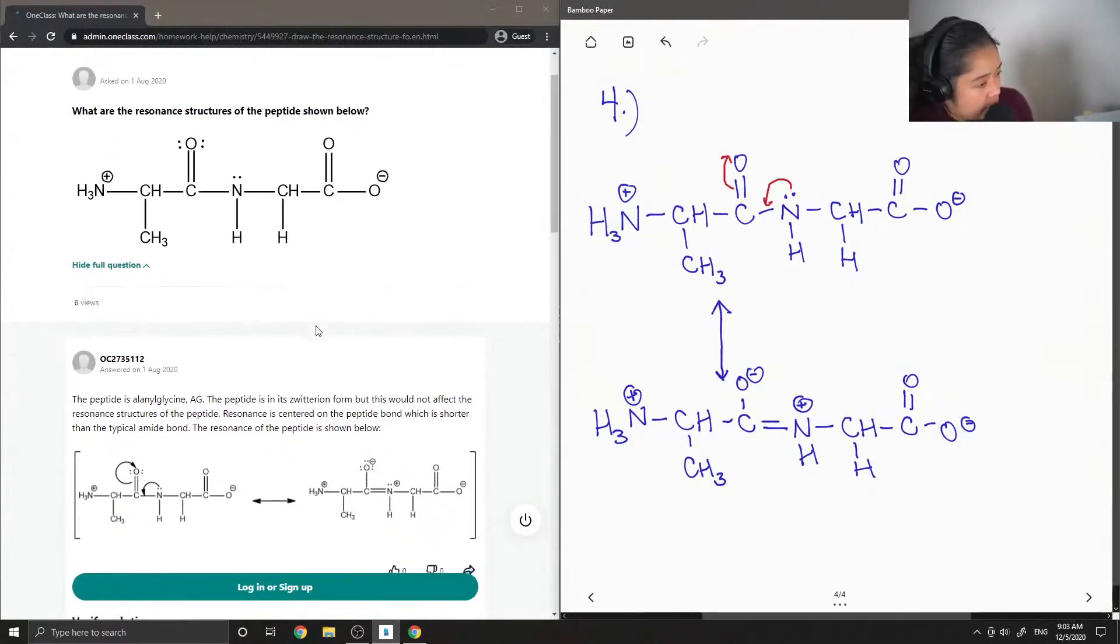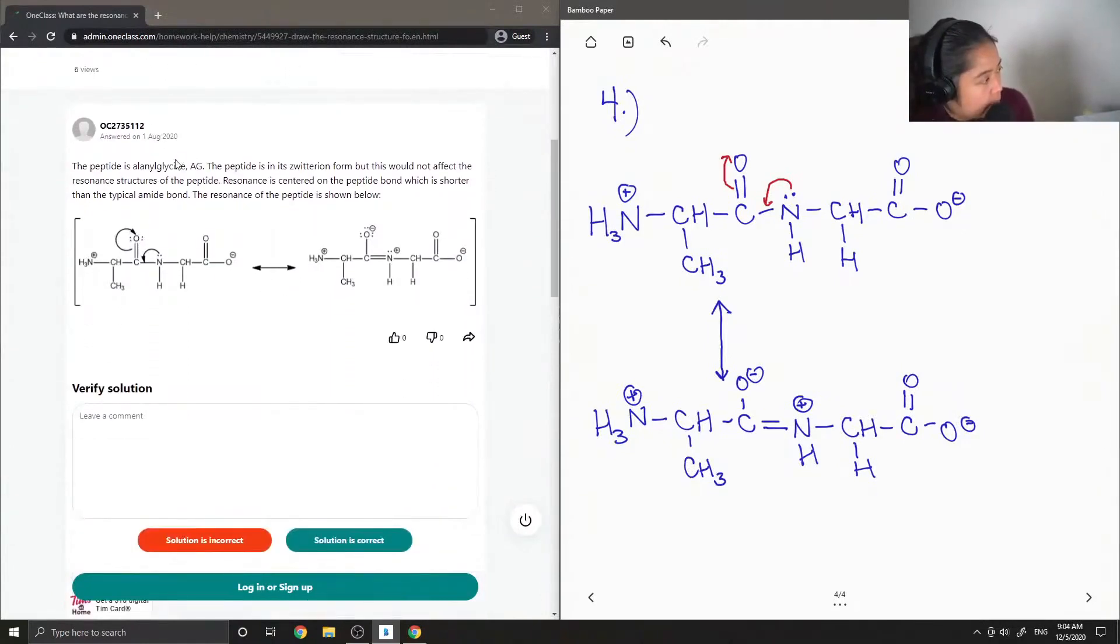So let's see what the junior tutor said. The peptide is alanylglycine, A-G. The peptide is in its zwitterion form, but this would not affect the resonance structures of the peptide. Resonance is centered on the peptide bond, which is shorter than the typical amide bond. The resonance of the peptide is shown below.